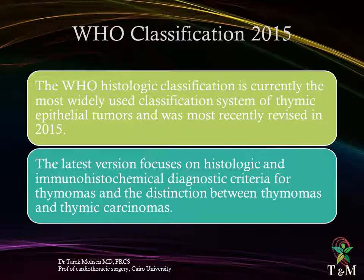The World Health Organization Histologic Classification is currently the most widely used classification system of thymic epithelial tumors, and was most recently revised in 2015. The latest version focuses on histologic and immunohistochemical diagnostic criteria for thymomas, and the distinction between thymomas and thymic carcinomas.